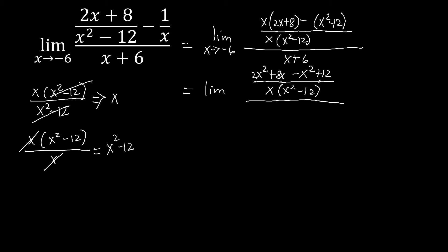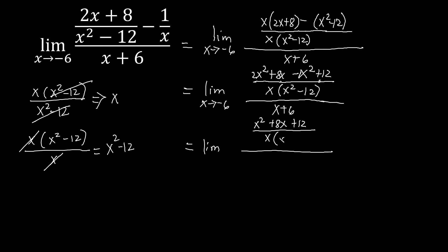Going over to the denominator, we have x plus 6, as x approaches negative 6. Simplifying the numerator: 2x squared minus x squared — this x squared is understood with a 1 — combining like terms gives x squared. Then we have plus 8x, and then plus 12. That is over x times (x squared minus 12), all over (x plus 6) as x approaches negative 6.